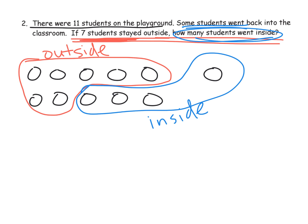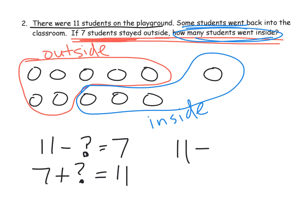So what is our number sentence? Well, one number sentence would be: 11 students on the playground take away something leaves us with the 7 students who stayed. We could do 7 plus what equals 11. They could also say 11 minus 7 equals question mark. There's a variety of number sentences students could come up with. Parents and teachers, your task is not to say which one is right, but to make sure whatever number sentence your student comes up with is correct.